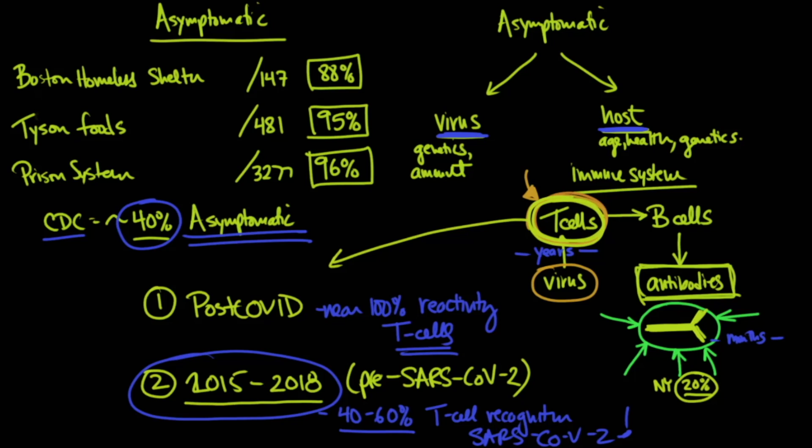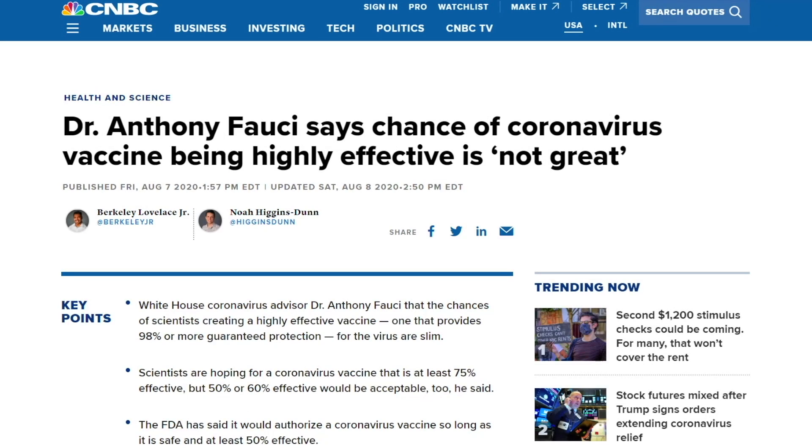As we speak right now, we have at least two trials that are in phase three, and they are testing people in the public to see whether or not the vaccines can help prevent them from getting coronavirus. And we're already getting information from Dr. Fauci talking about what to expect from a vaccine that would be approved by the FDA. He says here that scientists are hoping for a coronavirus vaccine that is at least 75% effective, but 50% or 60% effective would be acceptable too. So stay tuned and let's see what unfolds as we dig deeper into the world of immunology and vaccines.